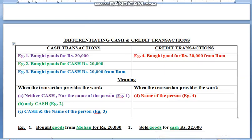Welcome children. This video is in continuation with the previous video on the journal chapter. Before we start anything new in this chapter called journal, we need to understand what is the basic difference between cash and credit transactions, because this is a topic that will create a lot of problems when you solve practical questions of journal. So first of all, you have to understand how to identify cash and credit transactions.